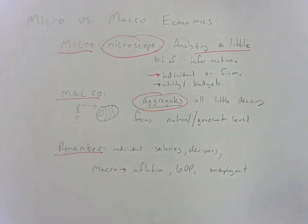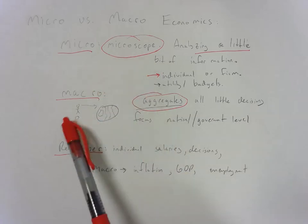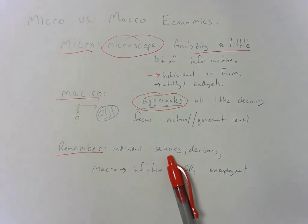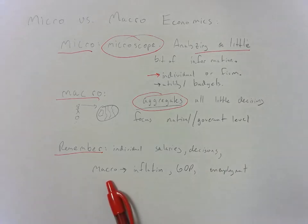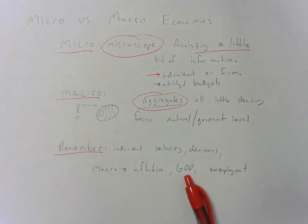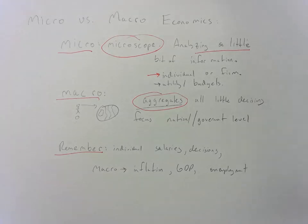Remember, when you're thinking about the difference between micro and macroeconomics: micro is microscope, macro is aggregating everything. Micro is things like individual salaries or decisions — the things that me and you do every day. Whereas macroeconomics is what gets reported in the news, generally. Things like unemployment, GDP, the dollar value of everything that's being produced, inflation — all of those government or national level statistics and ideas.